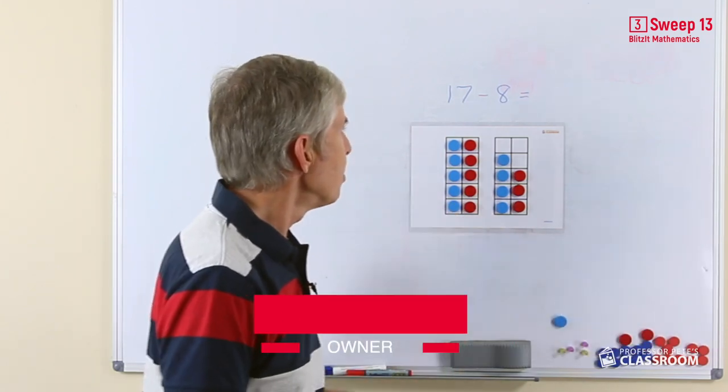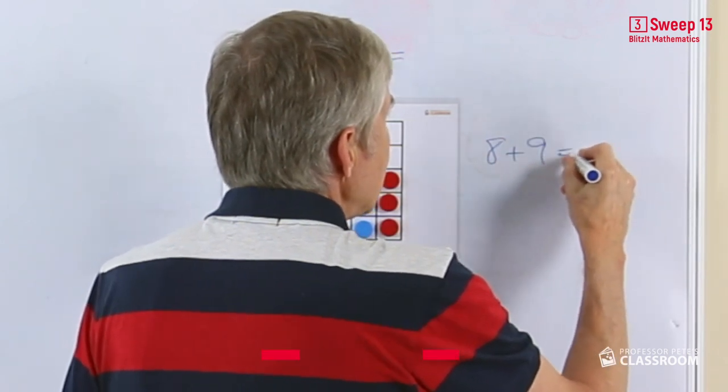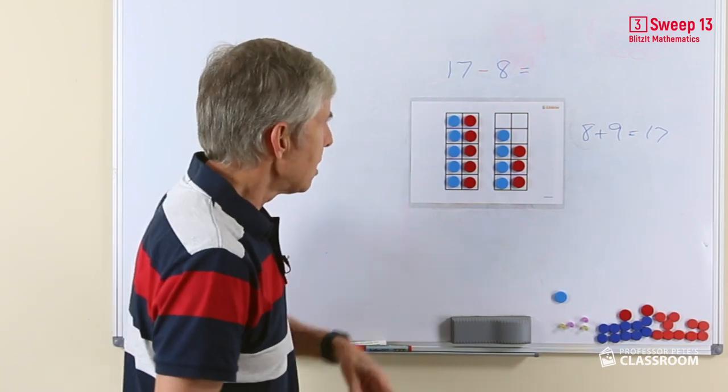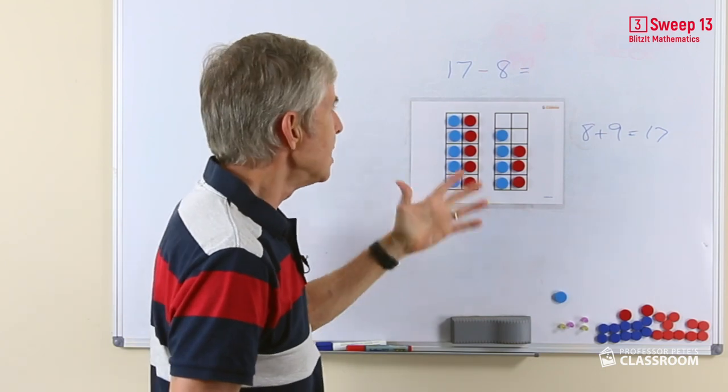So here's an example. The addition fact would be 8 plus 9 equals 17 or 9 plus 8 equals 17, and that of course is based on knowing double 8 is 16. Then when we look at subtraction we're looking at saying